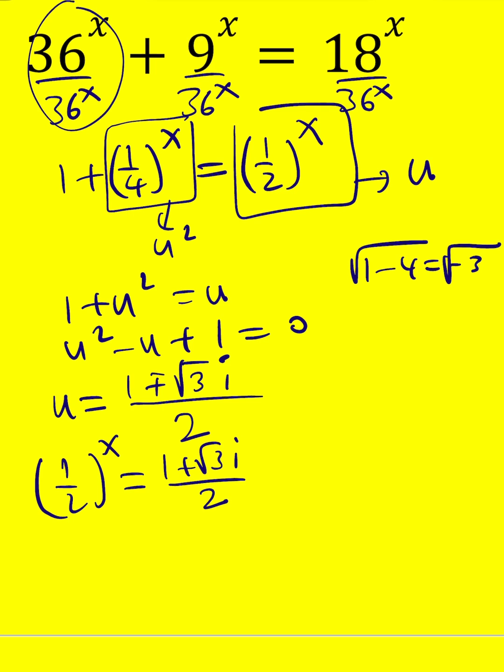You can go on and ln both sides, and when you do, you're going to get something like this: x times ln one half equals ln 1 plus root 3i divided by 2. And from here, you can easily find x, right?